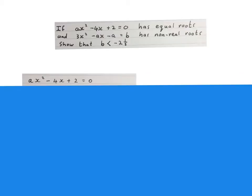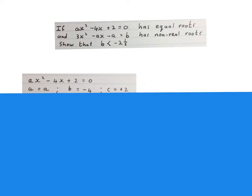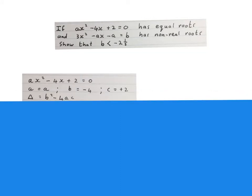We will use the two equations separately and then together. We write down the first equation in standard form — it is already in standard form. Because I'm going to work with the discriminant b² minus 4ac, I need to identify all those values: a is the coefficient of x², b is the coefficient of x which is minus 4, and c is the constant at the back.